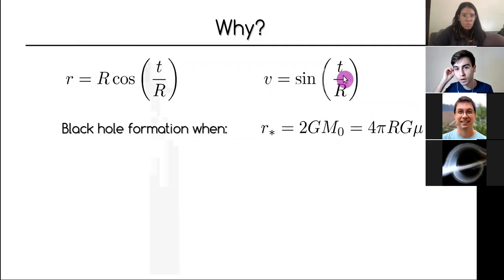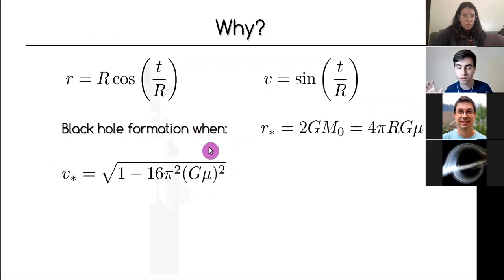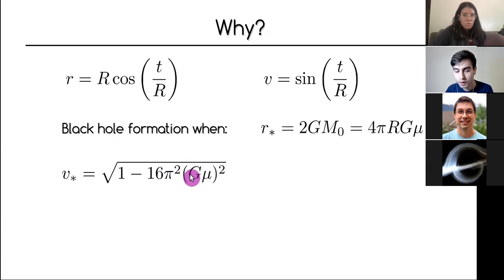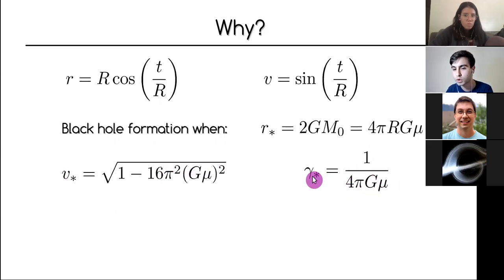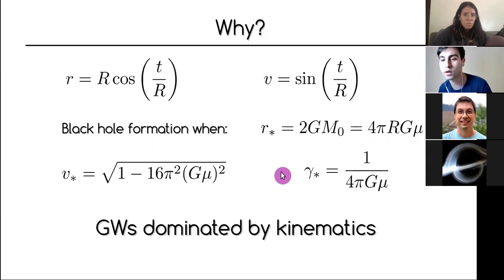From the Nambu-Goto equation, we can solve for the velocity at the moment of black hole formation: v_BH = sin(arccos(R_Sch / R_0)). This velocity is independent of loop radius — for fixed string tension, any loop size collapses at the same velocity. Furthermore, taking string tension to zero makes the event increasingly relativistic. Lighter strings collide at faster velocities, which is why they produce more gravitational waves — the emission is dominated by kinematics.